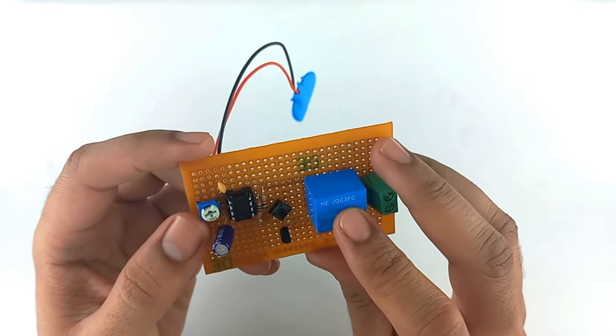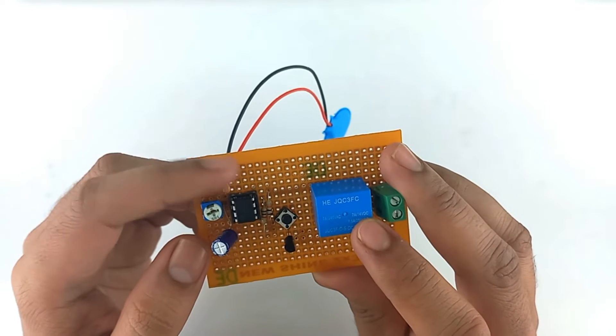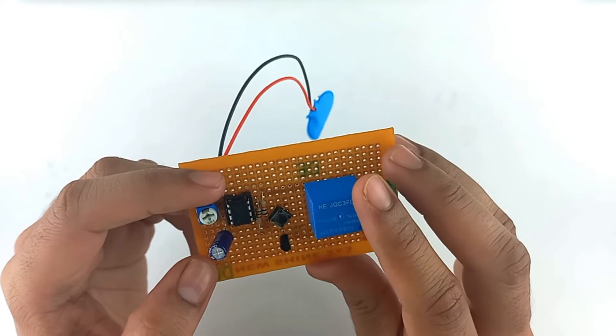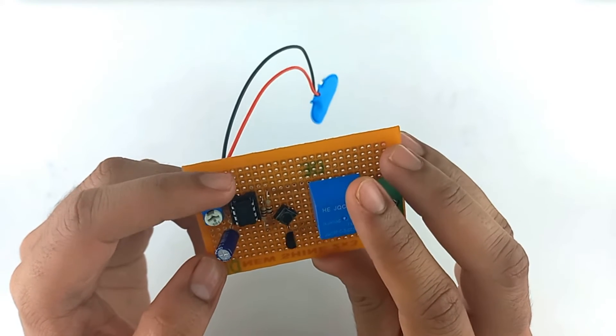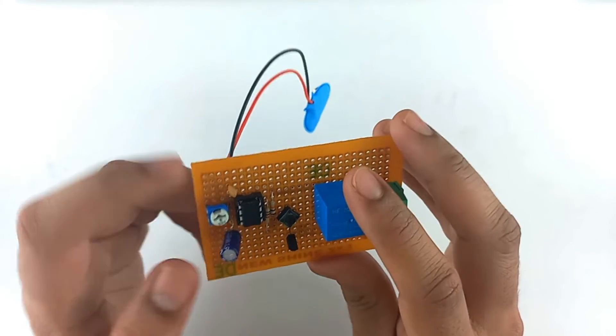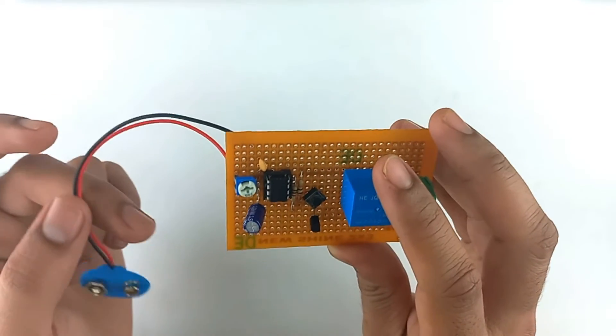Pin number 5 is connected with the help of ceramic capacitor and then connected to ground. Pin number 6 and 7 are shorted and connected to potentiometer. Pin number 8 is connected to the 9V battery positive terminal.